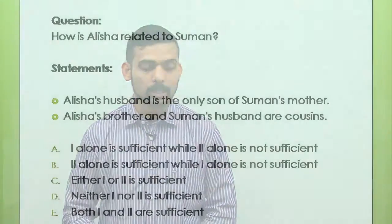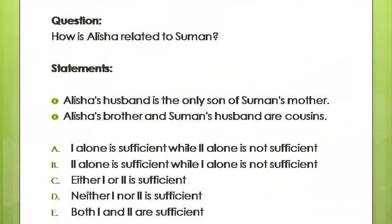Take a look at your screen, friends — we will see one more example. The question is: how is Alicia related to Suman? And it is followed by two statements. The first statement says: Alicia's husband is the only son of Suman's mother.